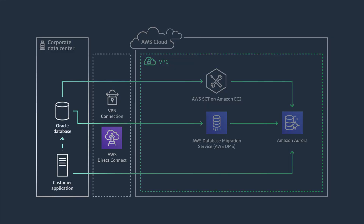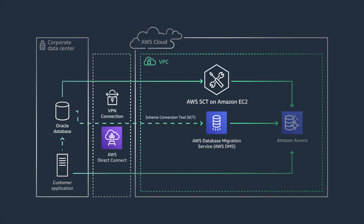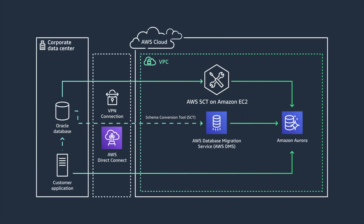Let's take a closer look at this process. Your application continues to write to the source Oracle database. On an EC2 instance, you install and configure AWS Schema Conversion Tool to convert your existing database from one engine to another. Your current database schema may be using packages and features that cannot be directly converted to the target database engine. By using SCT, you can run a database migration assessment to gain a good understanding of your source and target database engines before conversion.